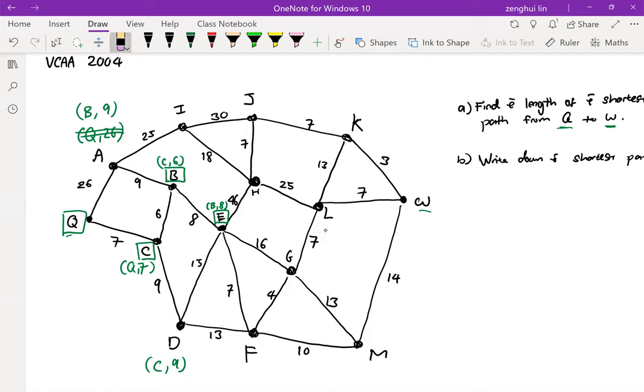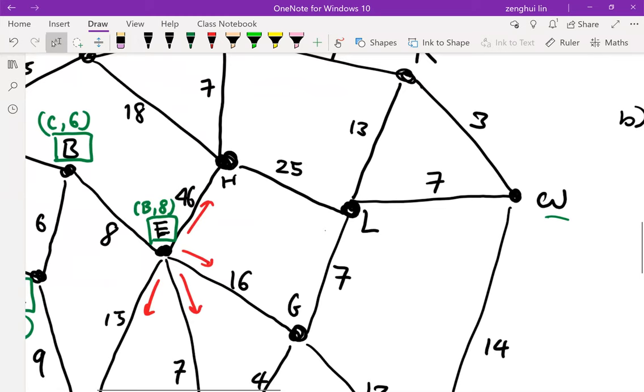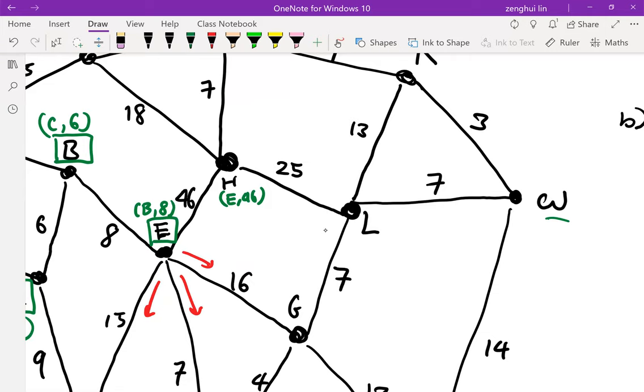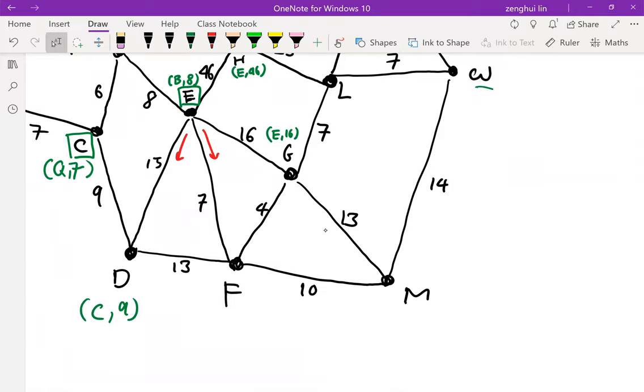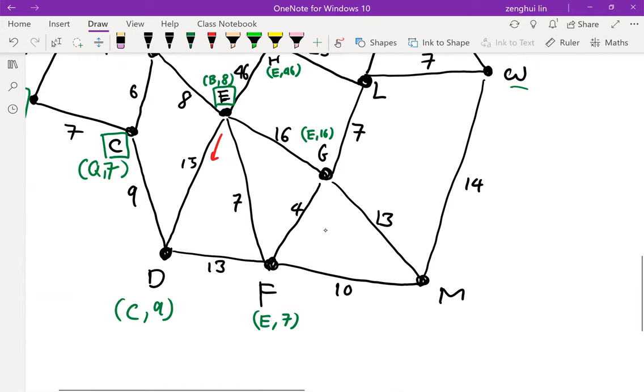From E, I can travel to H, G, F, D. So E to H, 46. Very unlikely that I will use this. From E to G, 16 steps. From E to F, 7 steps. And from E to D, 15 steps. And since 15 is much larger than 9, so it's not optimal. Strike that off.